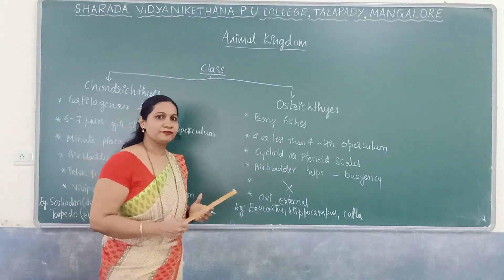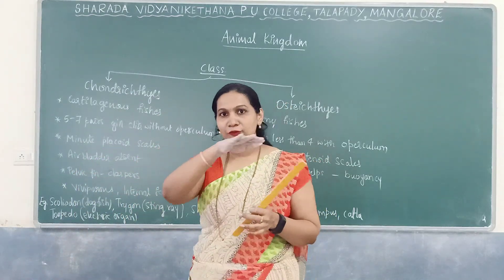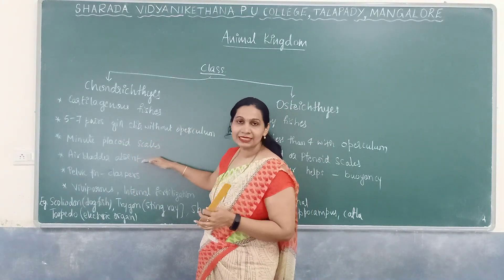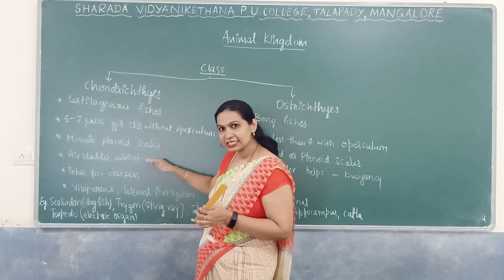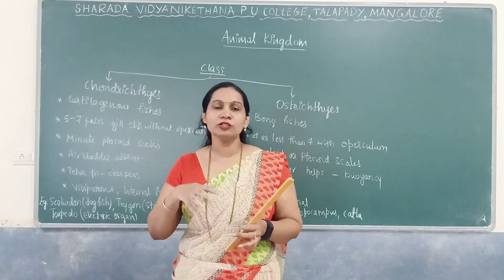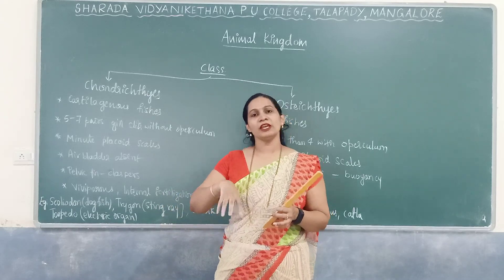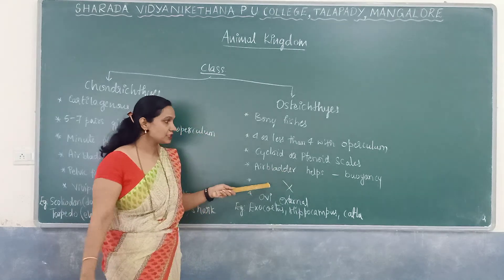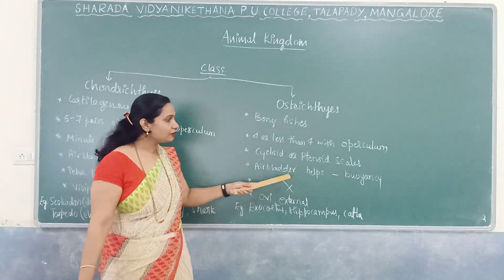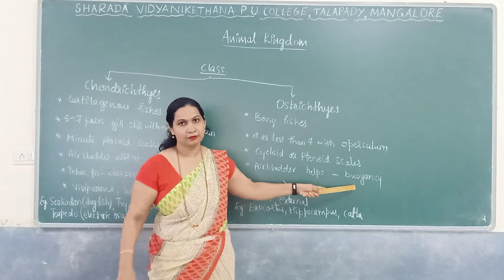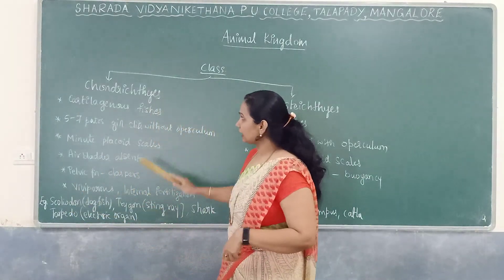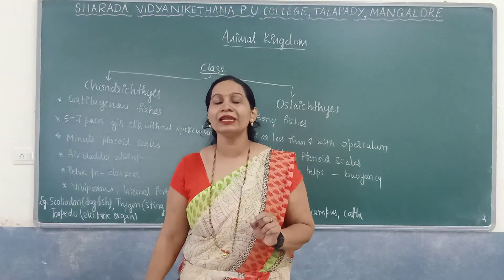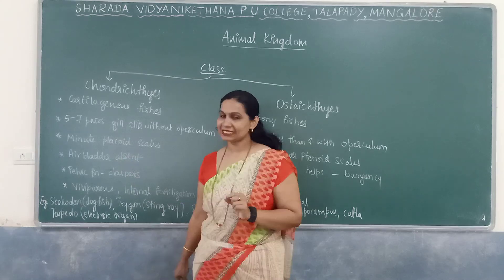Chondrichthyes lack an air bladder and must swim continuously to avoid sinking. Osteichthyes have an air bladder that helps them float. In Chondrichthyes, the pelvic fins have a structure called claspers, which are used for internal fertilization. Osteichthyes undergo external fertilization, where eggs and sperm are released into the water.